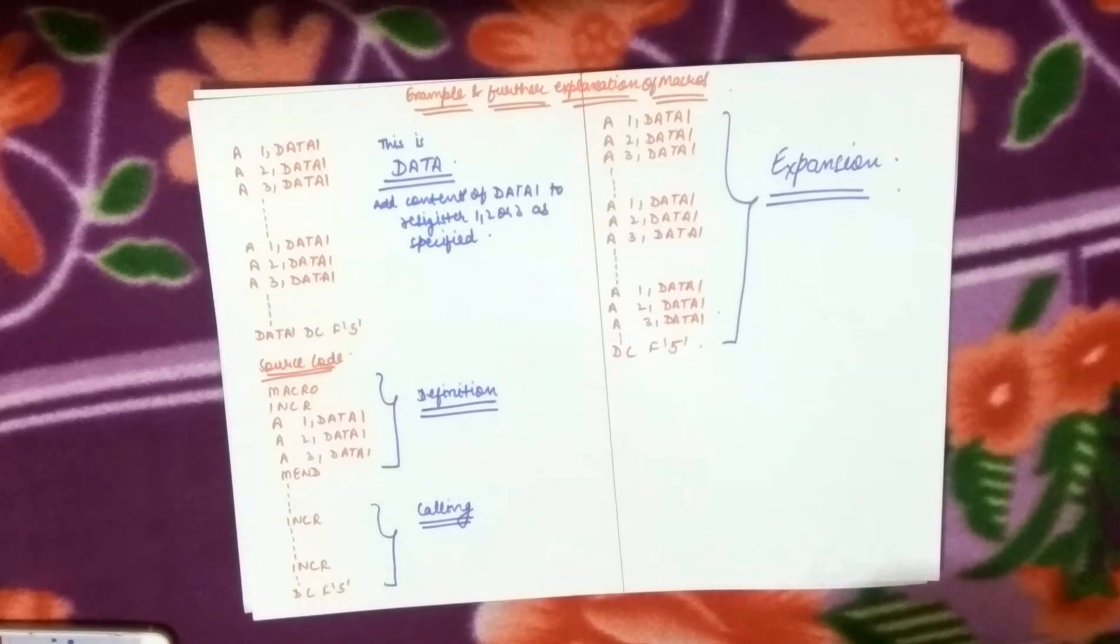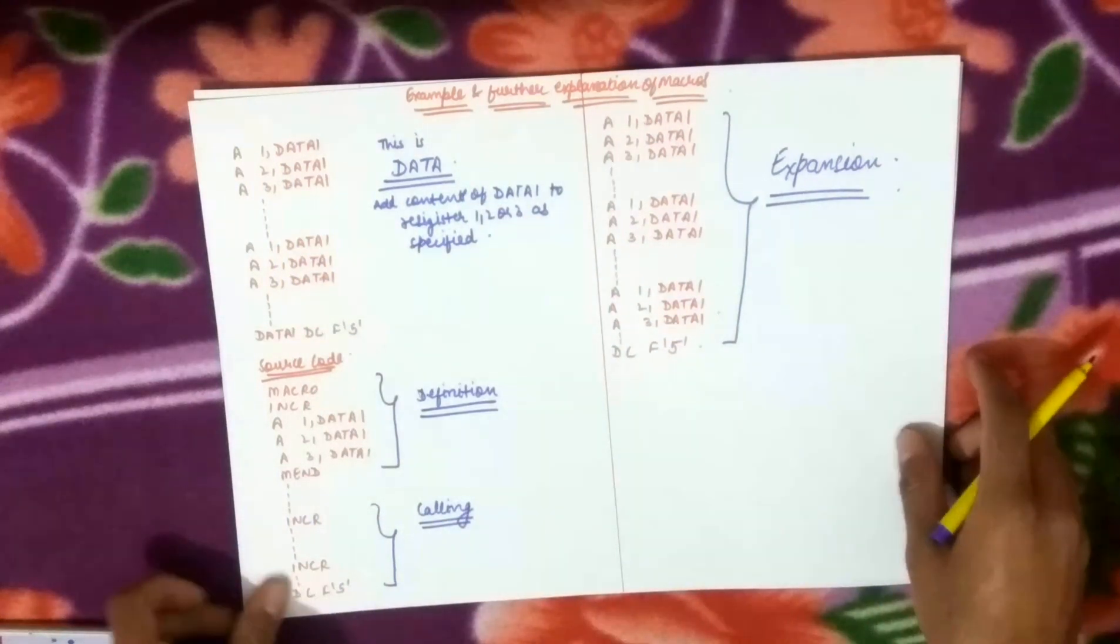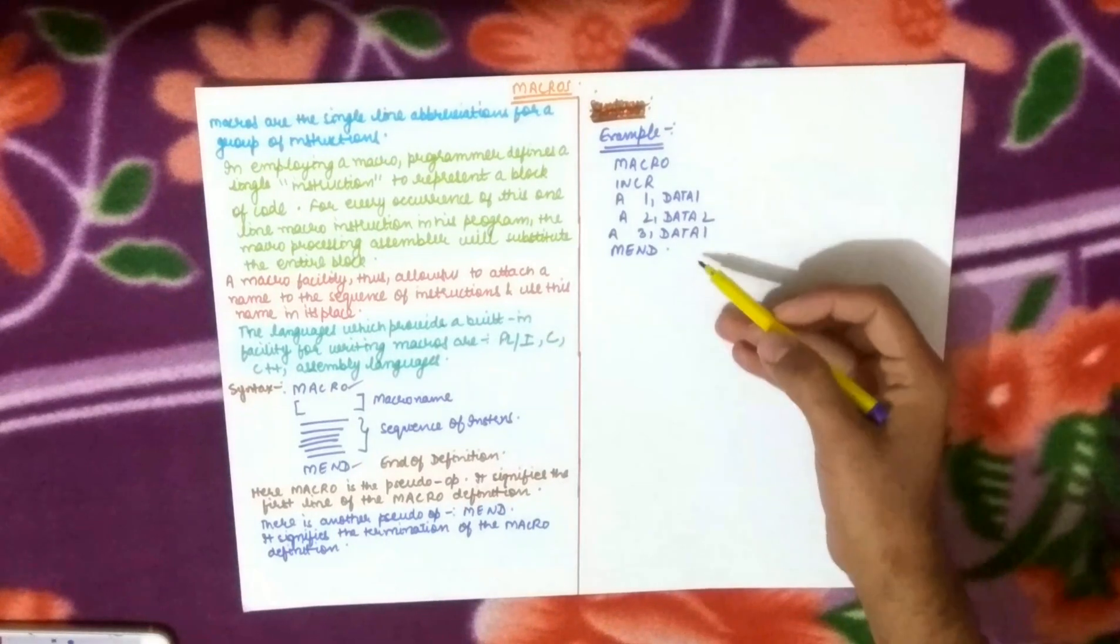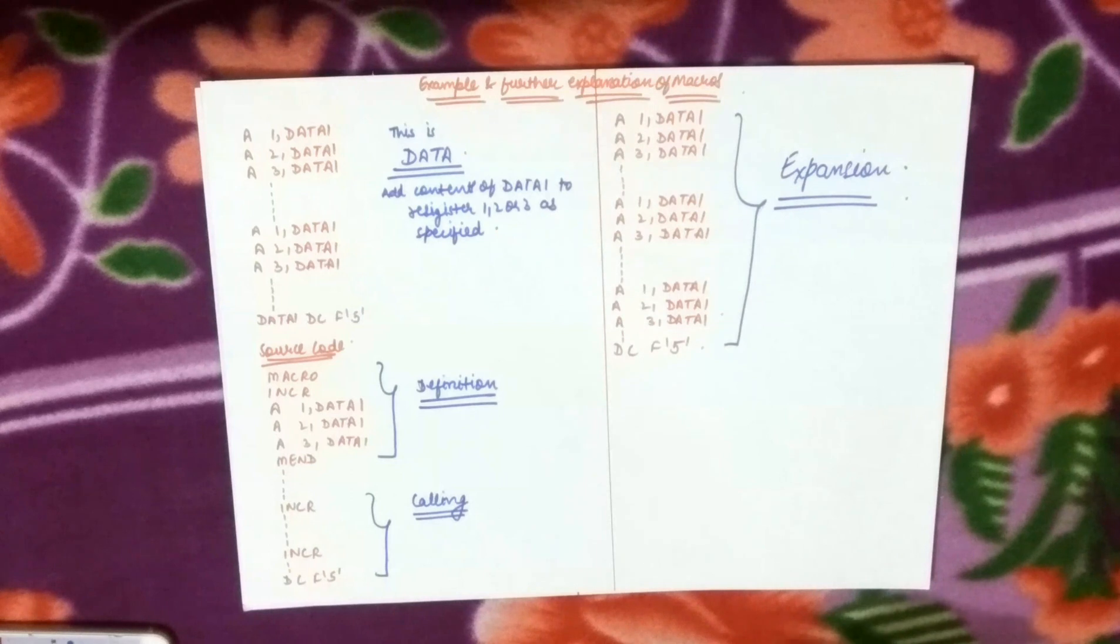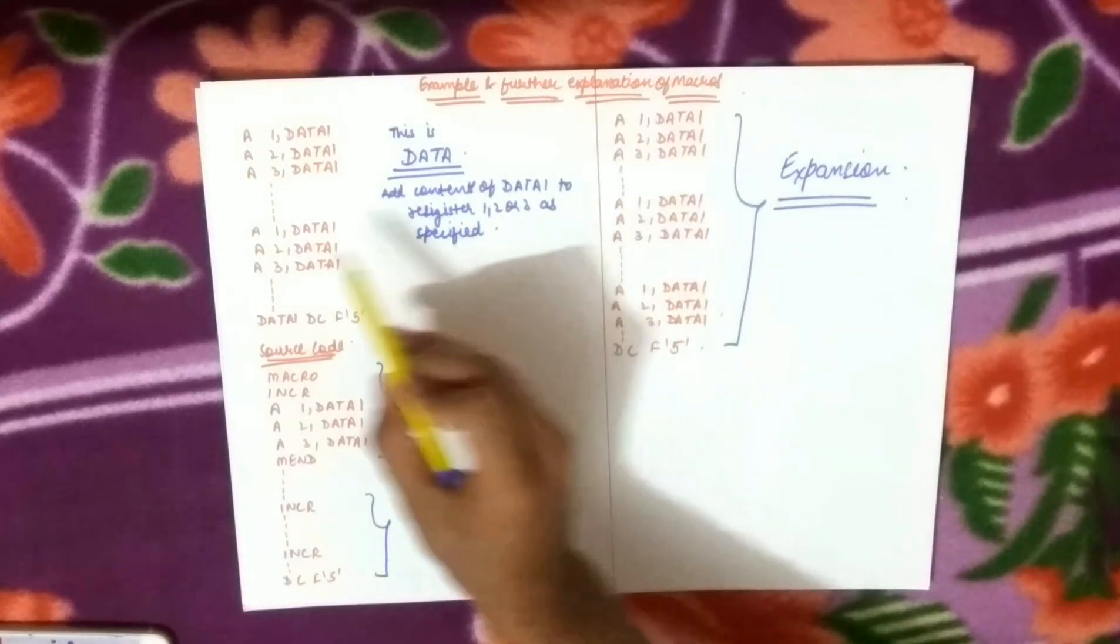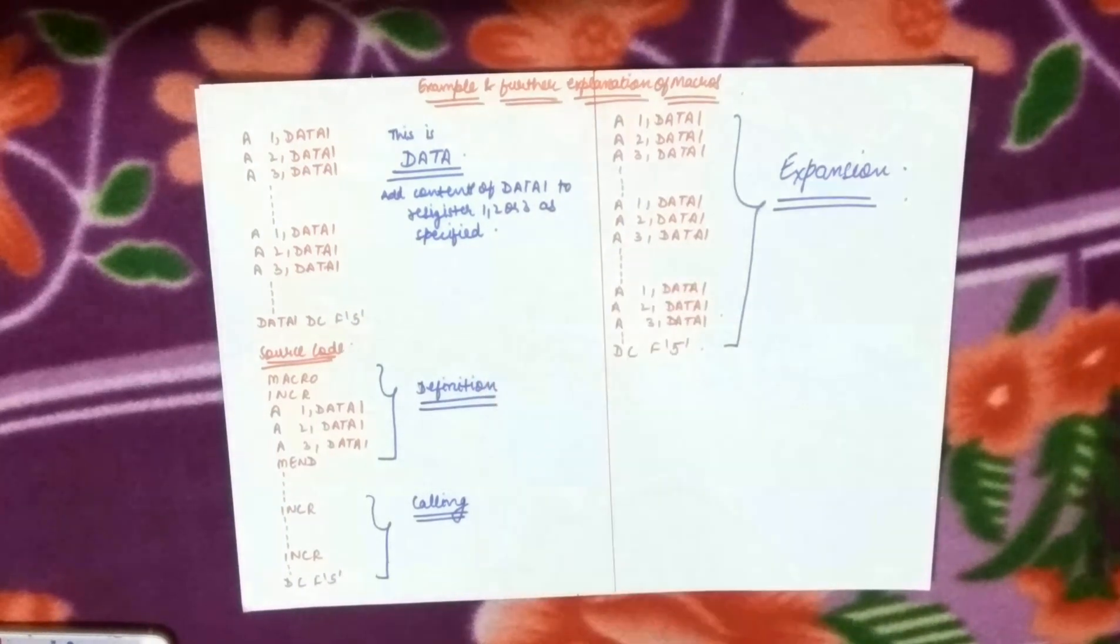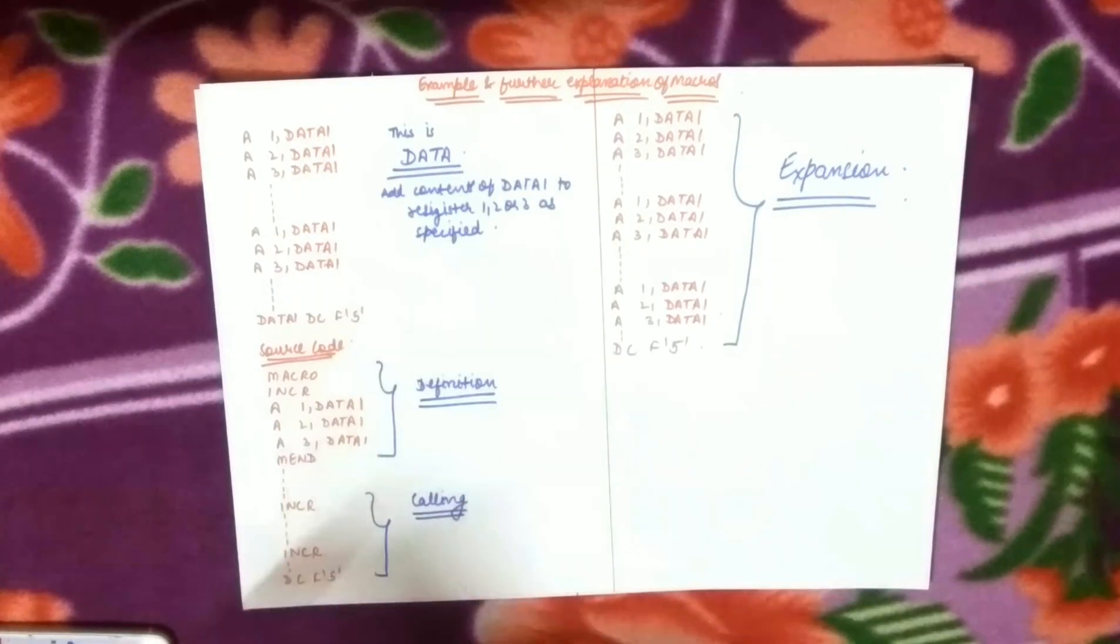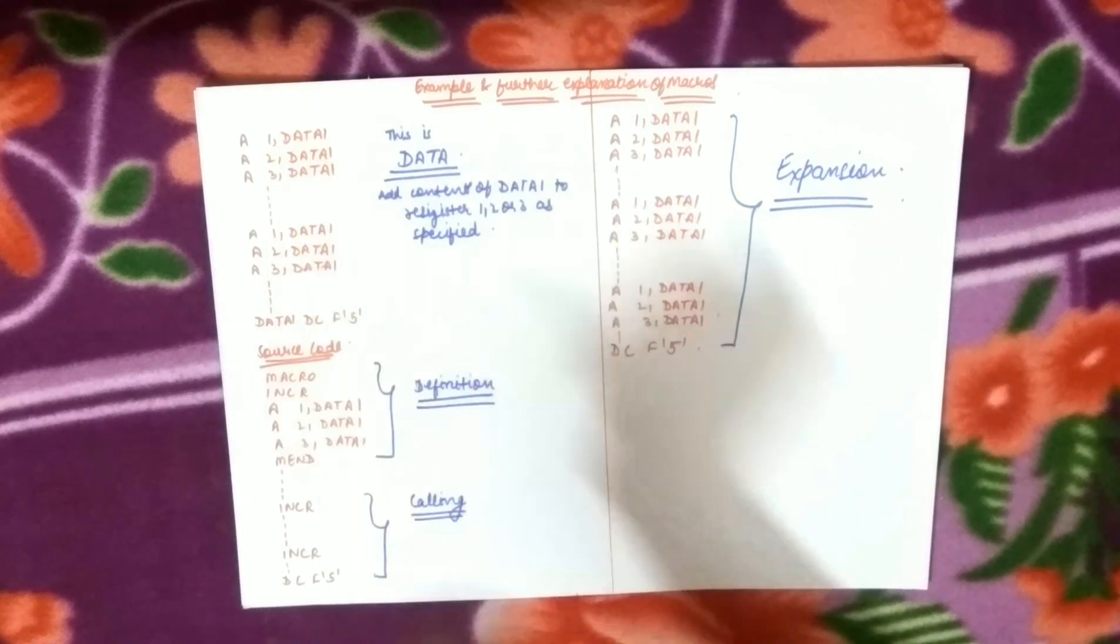In this video we have seen that a1,data1, a2,data1 and a3,data1 - this is what we call data, our macros data set of sequence of instructions to add contents of data1 to register 1 or 2 or 3 as specified. This is our operand and the contents of this one we have to add to one to three registers.